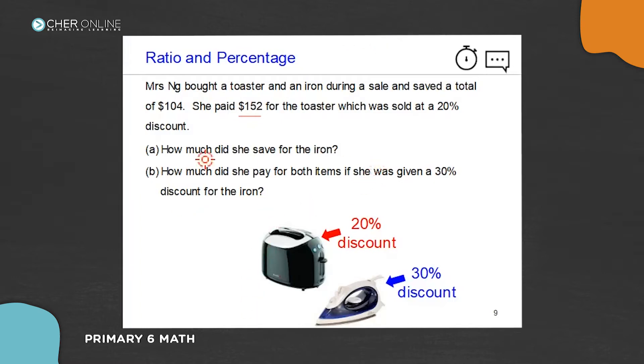Then we can find how much is saved for the iron after we know how much is saved for the toaster. We use the total saving minus what she saved for the toaster.